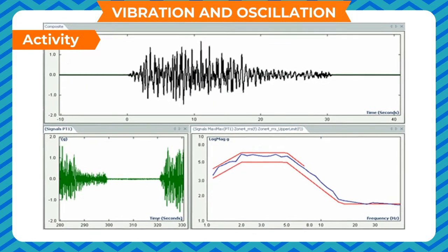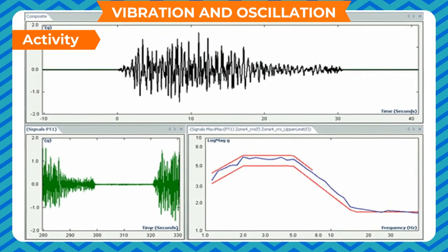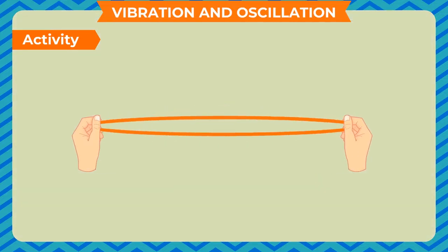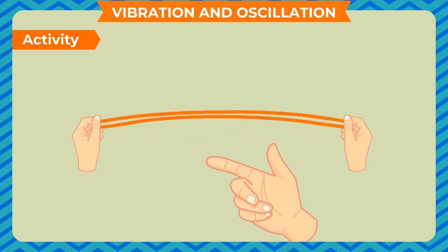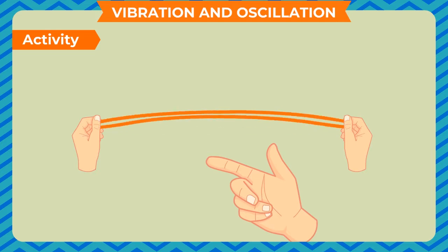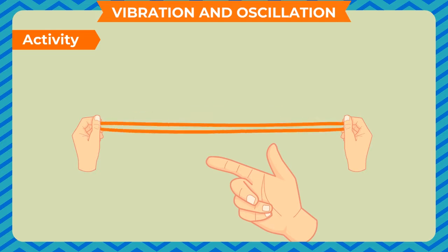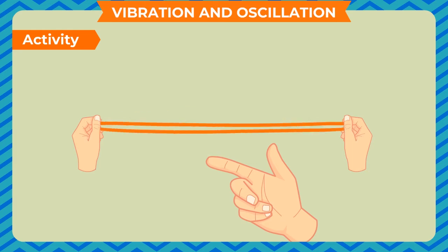To show that vibrations with higher frequency produce sounds of higher pitch: take a rubber band, stretch it slightly and strike it — it will produce a dull sound. Pull it hard and strike it again; a more shrill sound will be produced. Observing carefully, you will notice the rubber band vibrates faster when producing a shrill sound than when producing a dull sound.